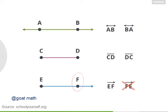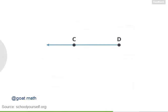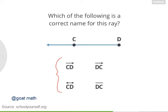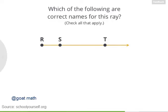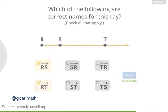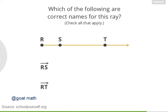Take a look at this ray with points C and D. Which of these is a correct name for this ray? This is ray DC — the first letter in the name is the ray's endpoint, which is D, and the arrowhead indicates the ray goes on forever toward C and beyond. Now look at this ray with points R, S, and T. Since three points are labeled, there's more than one correct name. Both ray RS and ray RT are correct names, since the ray has endpoint R and goes on forever in the direction of S and also T.